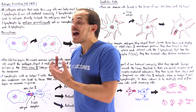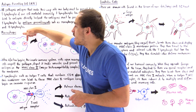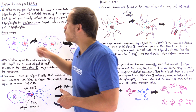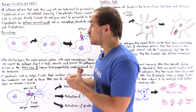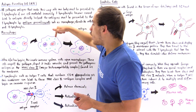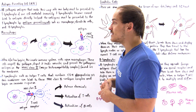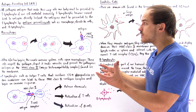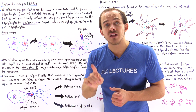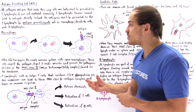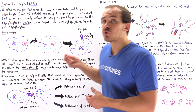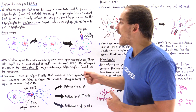Macrophages engulf pathogens. Suppose we have the bacterial cell shown in red — this is our macrophage and the macrophage engulfs that particular bacterial cell. Once that bacterial cell is inside the macrophage, the macrophage forms the phagosome, which contains lysosomes. The lysosomes contain digestive proteolytic enzymes that break down and digest that pathogen.